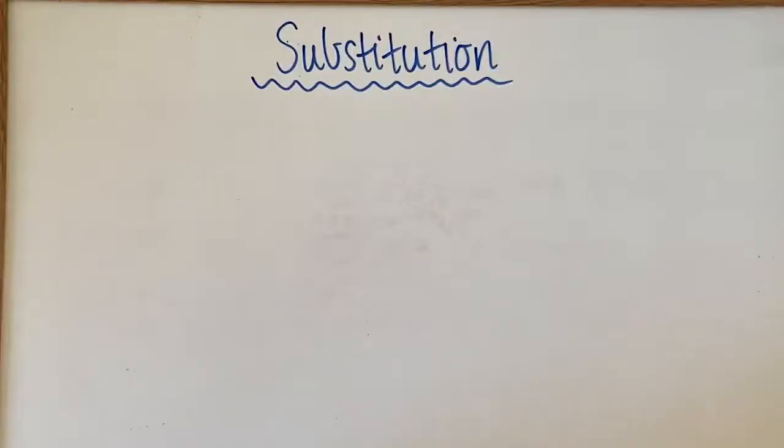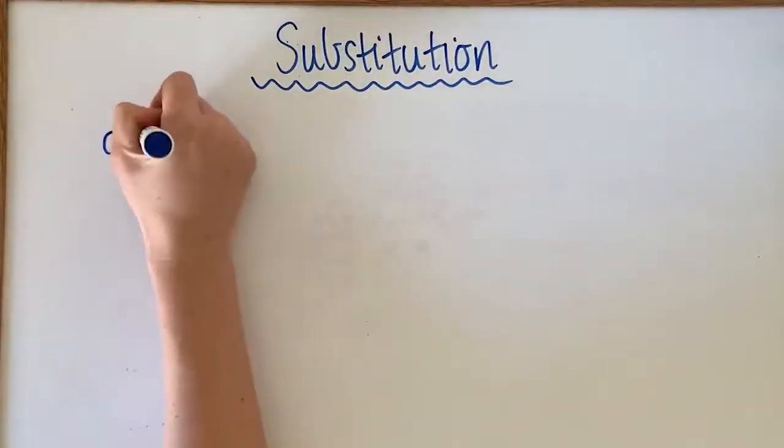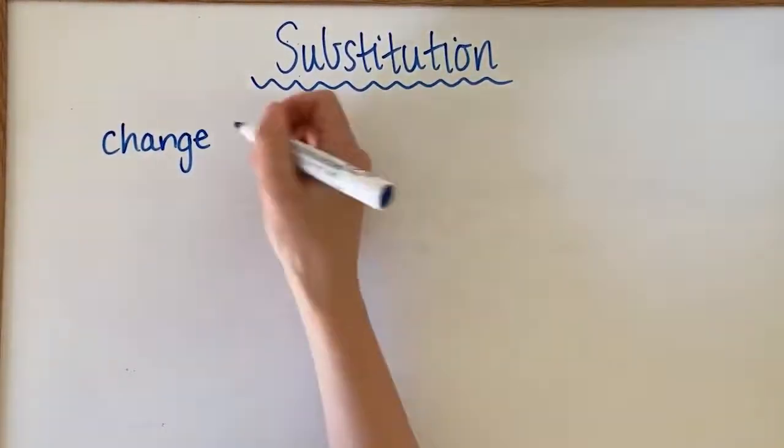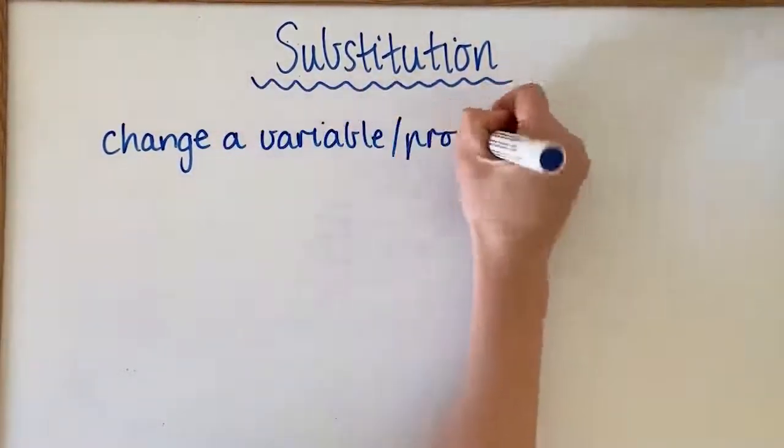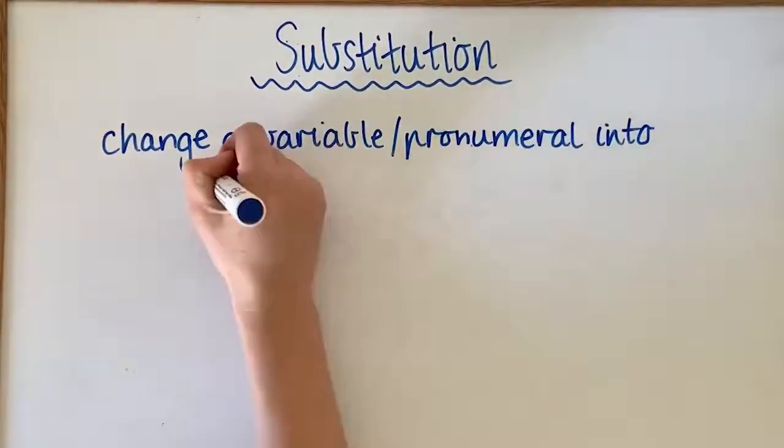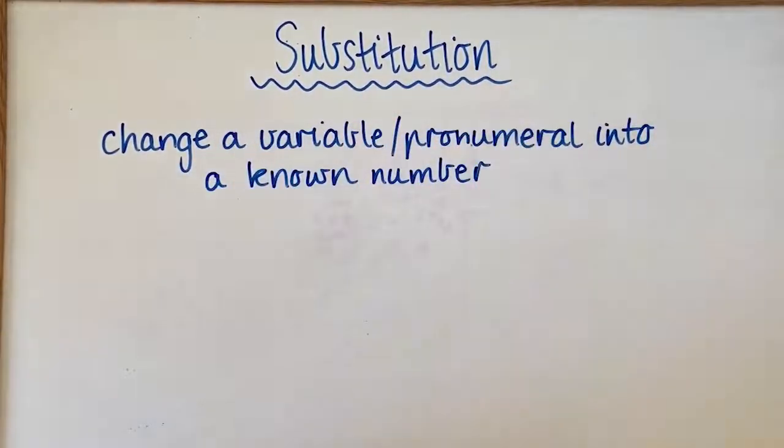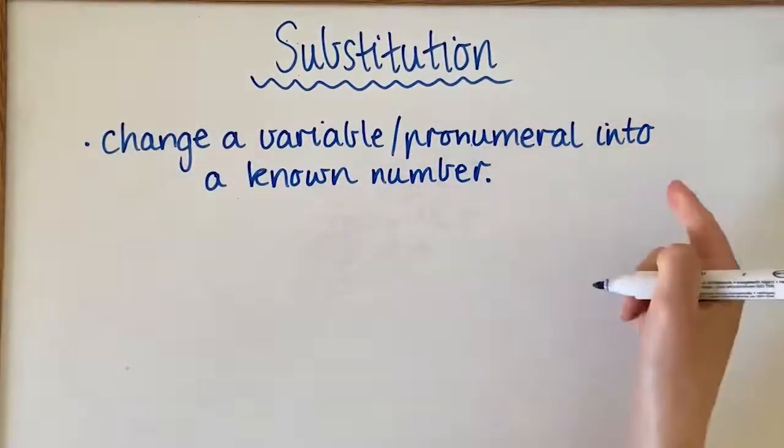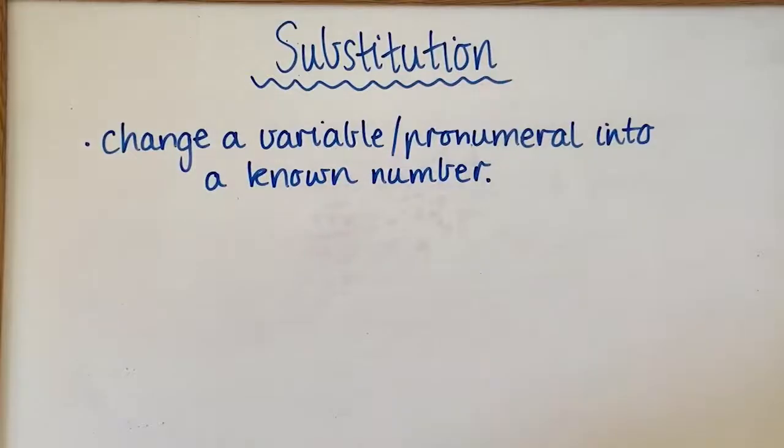All right, so in algebra, substitution is when you change a pronumeral or a variable into a number. When we start, a variable or pronumeral is an unknown number, but then we substitute in a known value for that number.